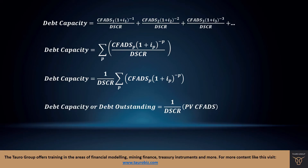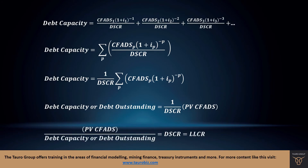In the brackets, the sum of CFADs multiplied by appropriate discount factors gives you the present value of CFADs. So we see an algebraic relationship that details the loan-life cover ratio formula. If we rearrange that, the loan-life cover ratio is just the present value of CFADs divided by the debt outstanding. That gives us a loan-life cover ratio which, in this instance, is just the constant debt-service cover ratio of 1.5 times. This illustrates that using a constant debt-service cover ratio is the same as using a loan-life cover ratio to calculate debt capacity.